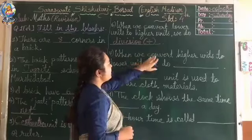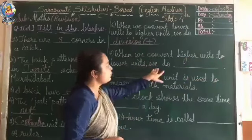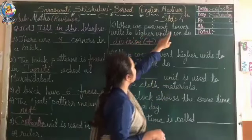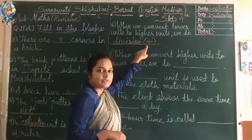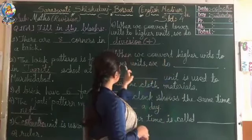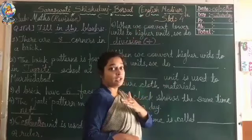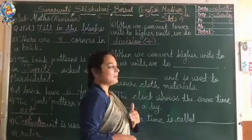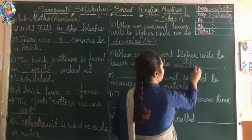Seventh number: when we convert higher units to lower units, we do blank. When we were converting lower to higher, we did division. Now we are doing the inverse of that — higher to lower units. Here what we have to do is multiplication. So the answer is multiplication.